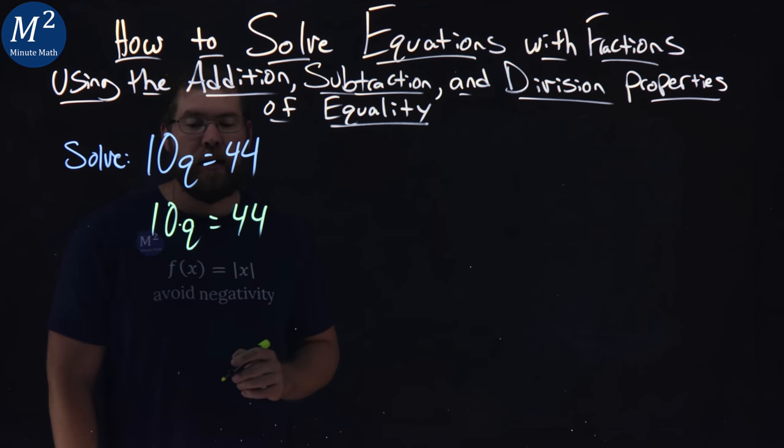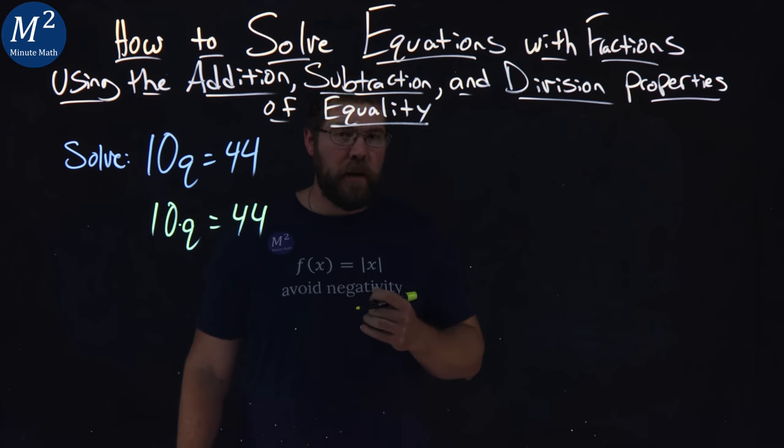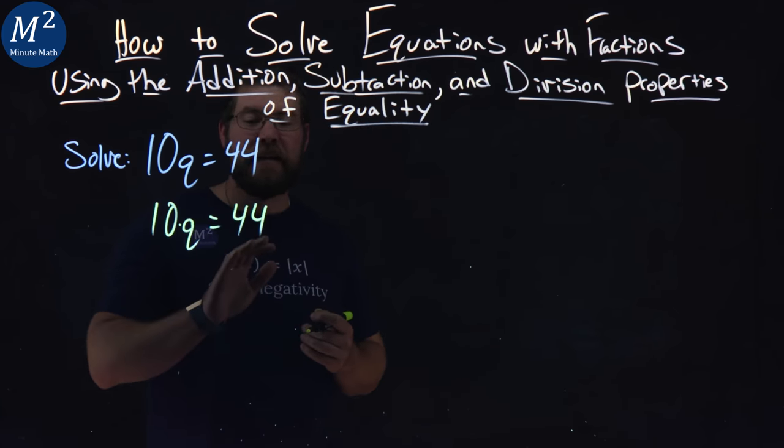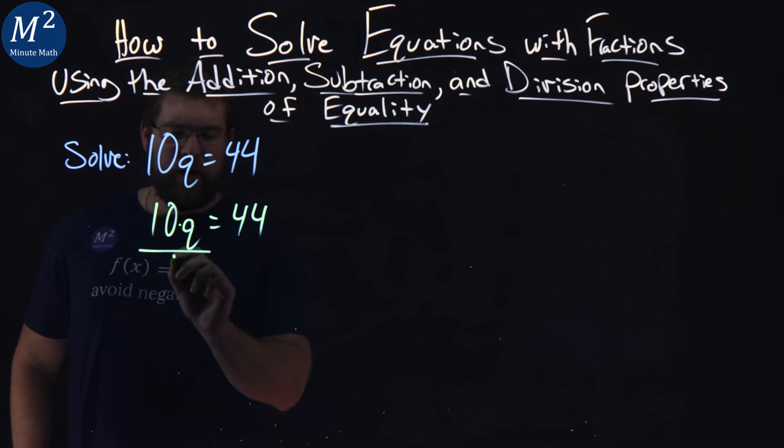Remember there's a multiplication going on here between 10 and q. Opposite of multiplication is division. Division property of equality states that we can divide by 10 to both sides of the equation. Divide both sides by 10.